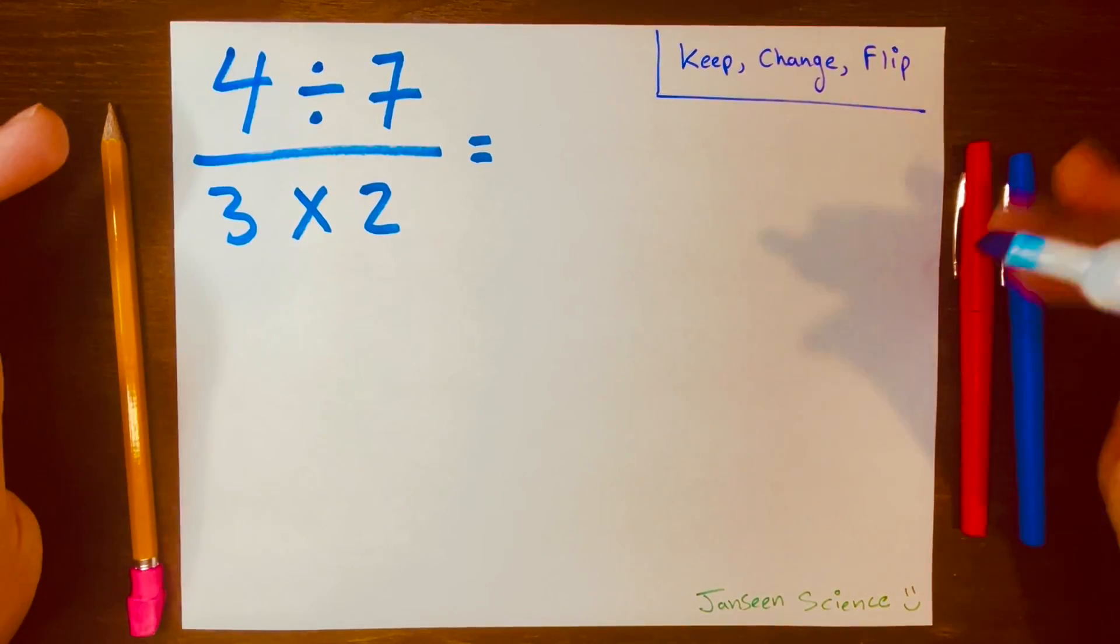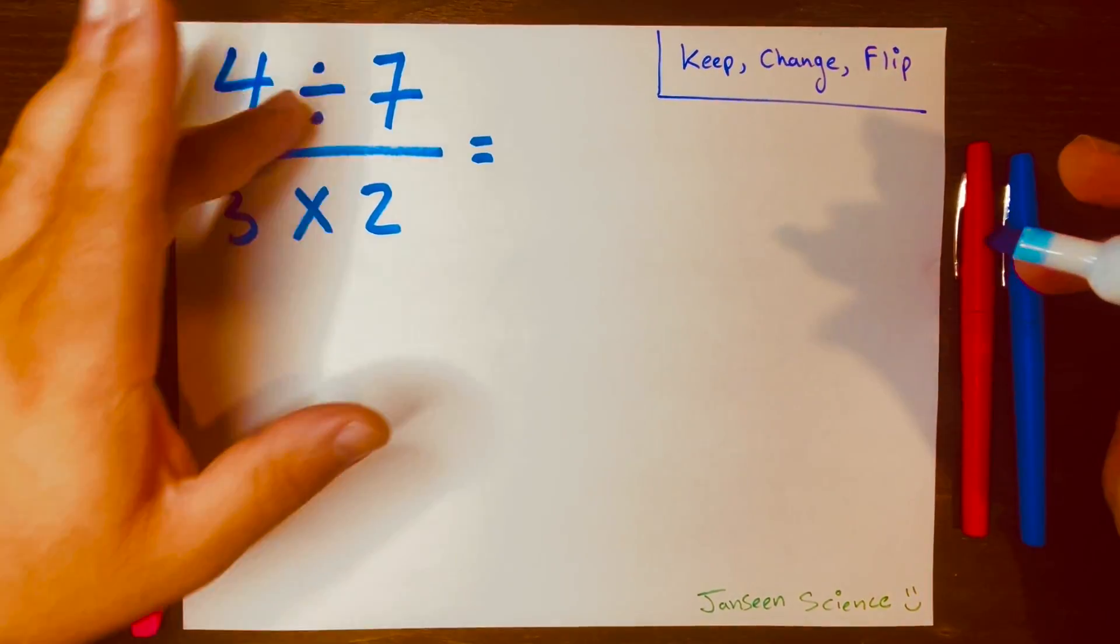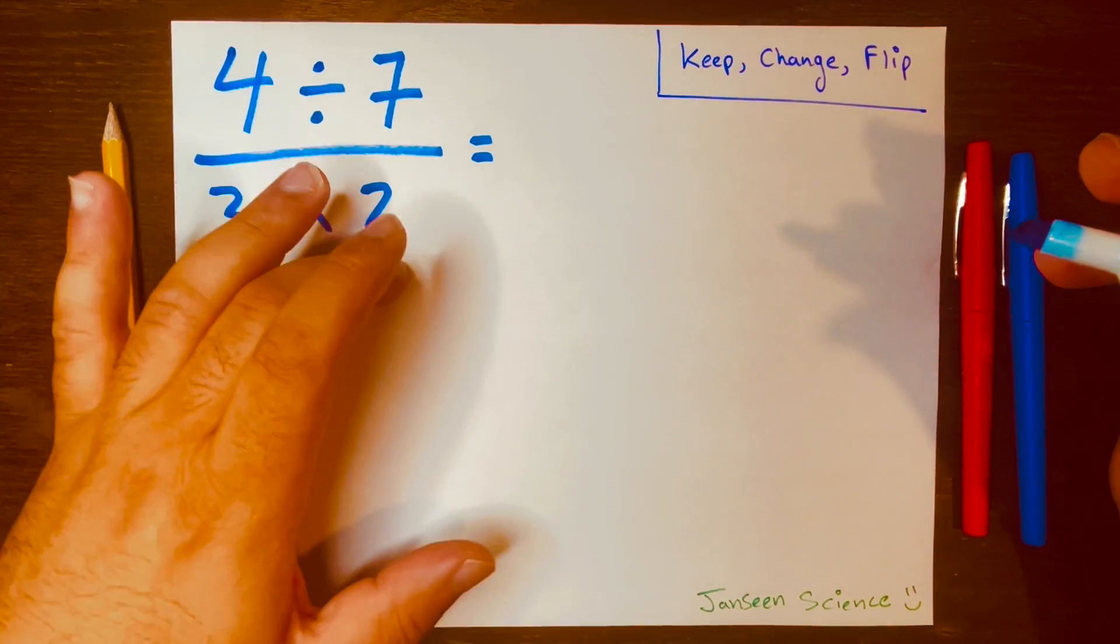Hi everyone, today we're going to solve this easy math problem: 4 divided by 7 divided by 3 times 2.